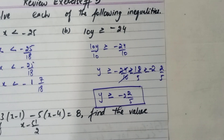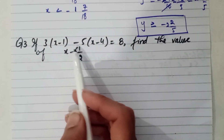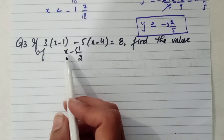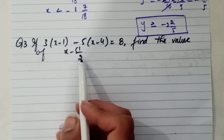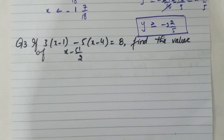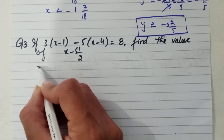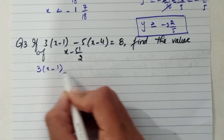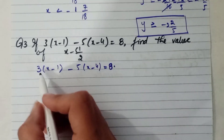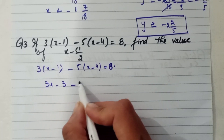Question number 2 is solved. Question number 3: if 3x minus 1 minus 5x minus 4 is equal to 8, find the value of x minus 5 and 1 over 2. First we find the value of x from the equation. We open the bracket by multiplying: 3x minus 3.